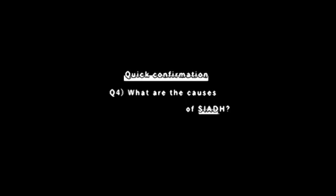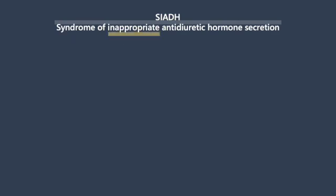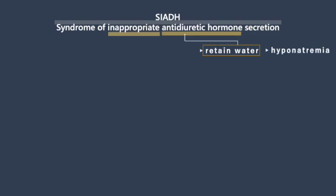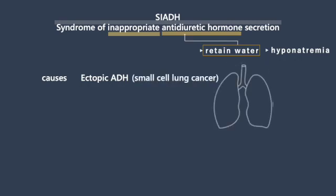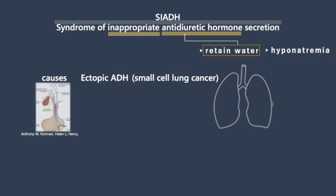What are the causes of SIADH? SIADH is a condition in which inappropriately high levels of antidiuretic hormone cause the body to retain water, resulting in hyponatremia. SIADH can be caused by tumors that release too much ADH — small cell lung cancer is the main reason for this. If the pituitary gland is injured, it may lead to excessive production of ADH.